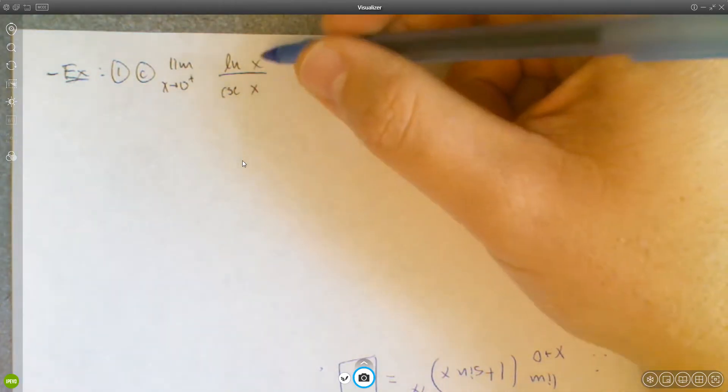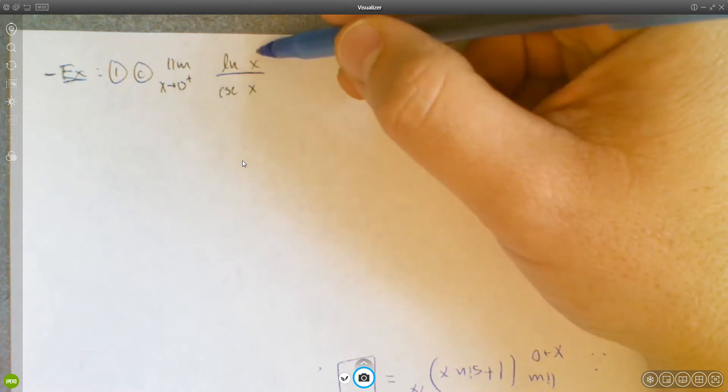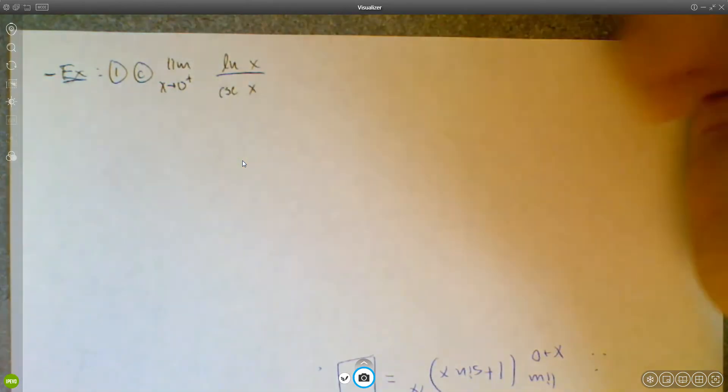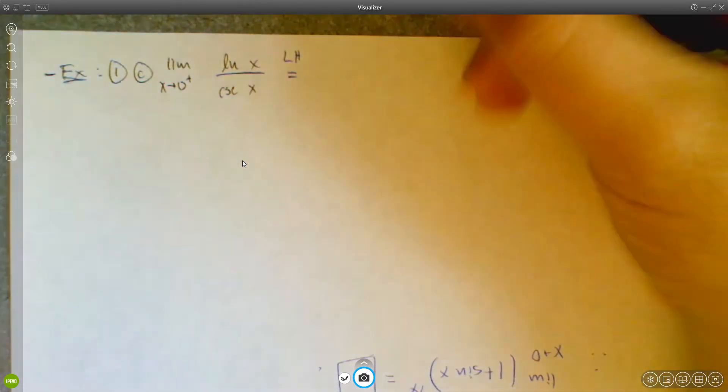So this is indeterminate. If you approach 0 from the right, ln of x goes to negative infinity. Cosecant x goes to positive infinity. So it's indeterminate of the form infinity over infinity. So you can use L'Hopital's Rule on it.